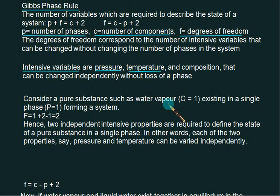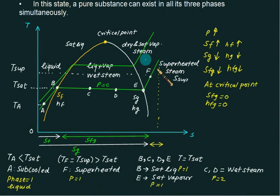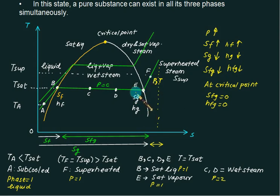Consider a pure substance such as water vapor. We have component C equal to 1 because it has the same chemical formula, and for vapor we have phase P equal to 1. Calculating F: F equals 1 minus 1 plus 2, giving degree of freedom equal to 2. We conclude that two independent intensive variables are required. In the superheated region, to locate a point we need a minimum of two pieces of information: one is pressure and one is temperature. Therefore the degree of freedom is 2 for the superheated region.